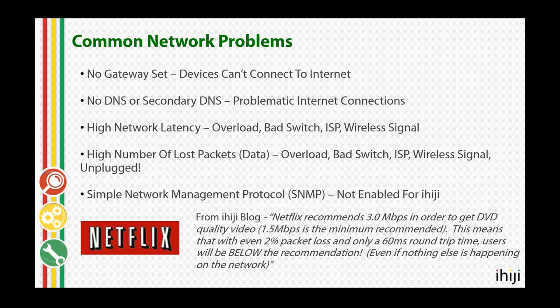Let's talk about tools to measure latency and packet loss and how they impact throughput. Netflix recommends 3 megabits per second for DVD quality (480p), 5 megabits per second for HD, and 1.5 as the minimum. On a 10/100 network, at zero milliseconds latency with no packet loss, TCP throughput is 94 megabits per second. Introduce 30 milliseconds of latency and it drops to 16 megabits per second. Introduce 90 milliseconds and it falls to 5 megabits per second — just barely hitting Netflix's HD recommendation.